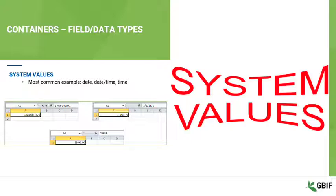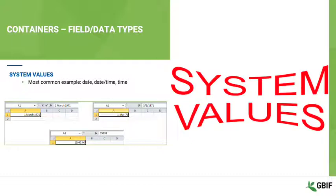System values have a double nature, and what you see on the screen is not usually the actual value that the software is storing in memory. Date and time fields are the most common example of this type of field. In this example, you typed 1 March 1971 into a cell in Excel and hit return. Now it says 1 Mar 71 in the cell and 3/1/1971 in the function bar. Excel is applying a display format to the cell, which you can change at will. However, if you remove the format, you see that what is actually being stored in the field is the number 25993.00, so the field is actually a float. You should beware because that system value may not be the same from software to software, and exports should be checked to make sure that the actual date is exported and not the system value.